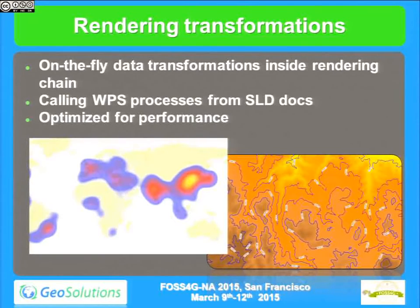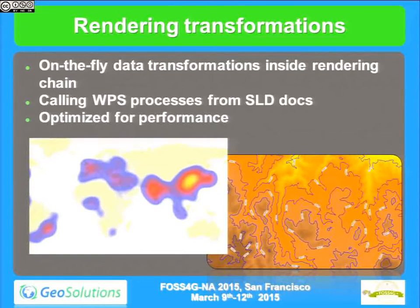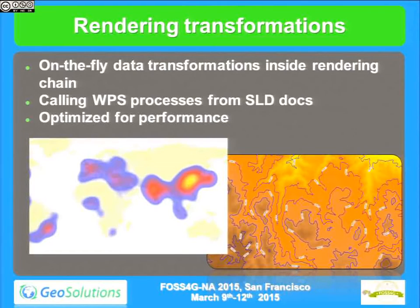Rendering transformations are the integration between WPS and WMS — the idea that you can take data and, just before rendering it, transform it into something else on the fly, taking into account the current drawing resolution. This allows GeoServer to do on-the-fly heat maps, interpolation, extraction of contour lines, and many other things at very good performance, because these operations are made at the WMS resolution you're looking at rather than the native data resolution. The nice thing about GeoServer's implementation is that it's completely pluggable — you can write your own rendering transformation, drop the jar, and GeoServer will run it.